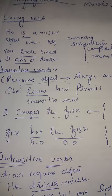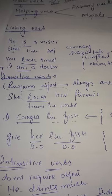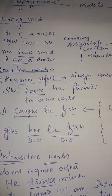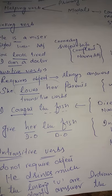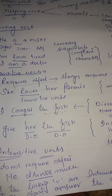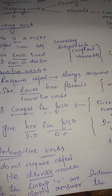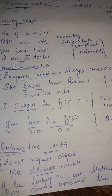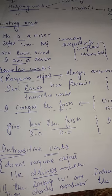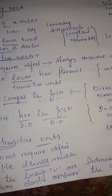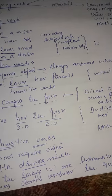For example: 'She loves her parents.' She loves what? Her parents. Here, 'she' is the subject, 'loves' is the transitive verb, and 'her parents' is the object. Another example: 'I caught the fish.' I caught what? The fish. So 'her parents' and 'the fish' both serve as objects of their respective transitive verbs.